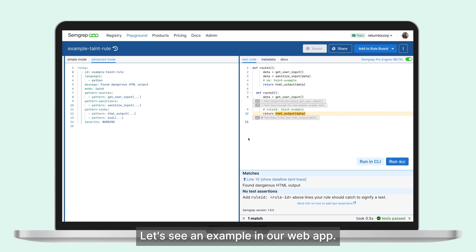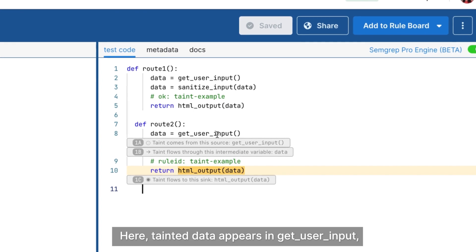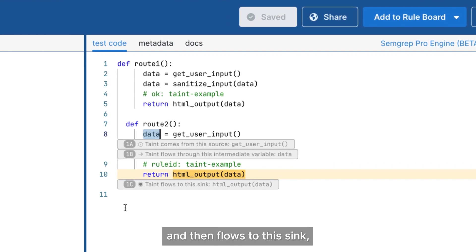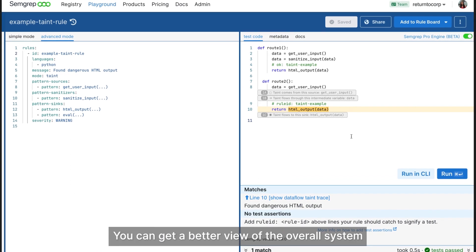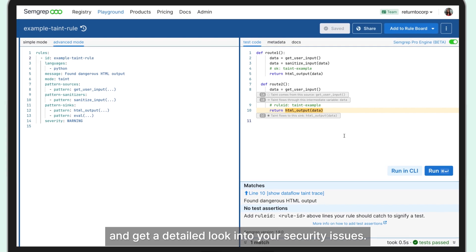Let's see an example in our web app. Here, tainted data appears in get user input, flows through data, an intermediate variable, and then flows to this sync, HTML output data. By understanding the Dataflow, you can get a better view of the overall system and get a detailed look into your security issues.